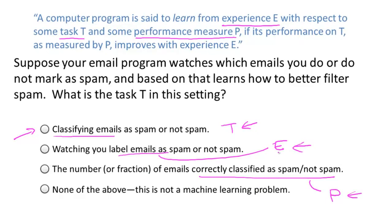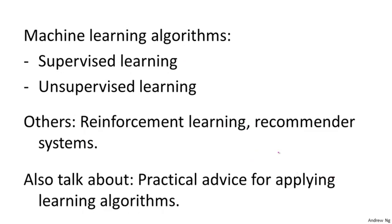In this class I hope to teach you about various different types of learning algorithms. The main two types are what we call supervised learning and unsupervised learning. In supervised learning, the idea is we're going to teach the computer how to do something, whereas in unsupervised learning, we're going to let it learn by itself.